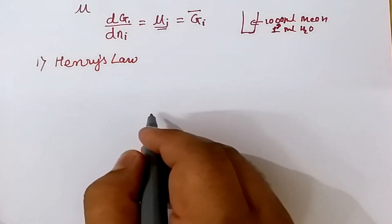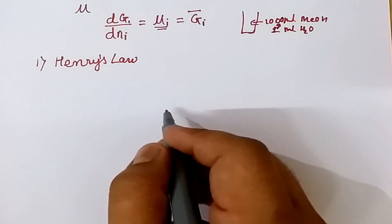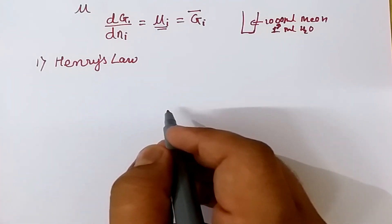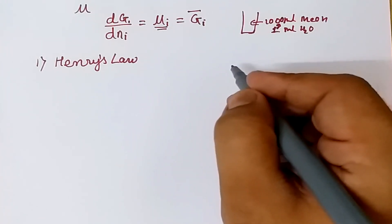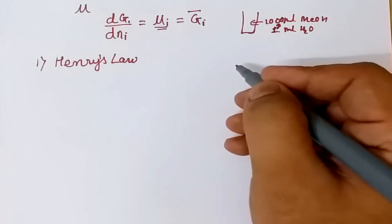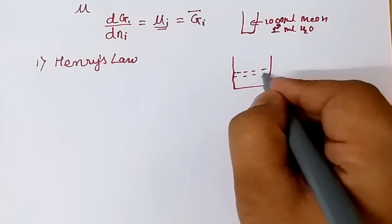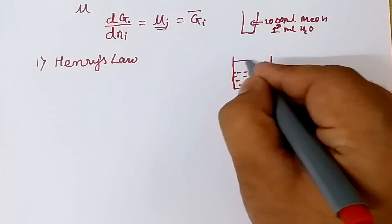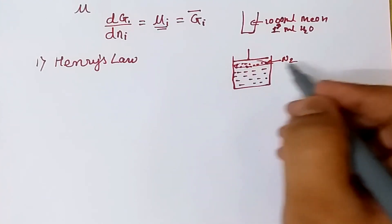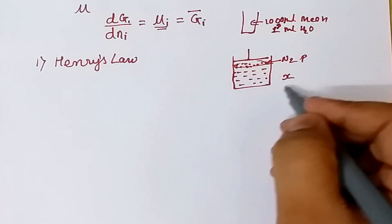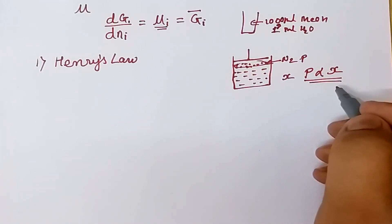Henry's law states that when any gas is dissolved in a solvent at a given temperature, the mole fraction of that gas is proportional to the pressure of the gas in solution. For example, consider a container with a solvent like water and a piston above it occupied by a gas like nitrogen. If p is the pressure and x is the mole fraction, then p is proportional to x.